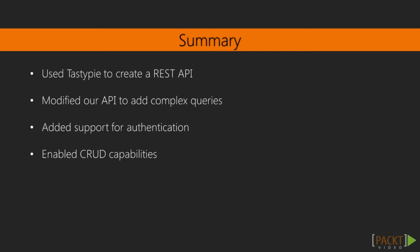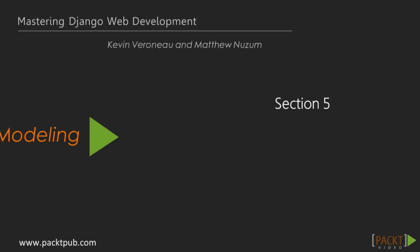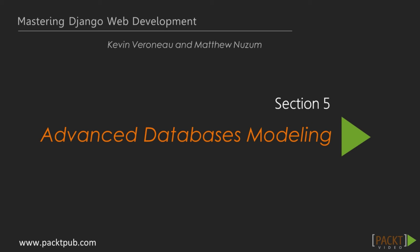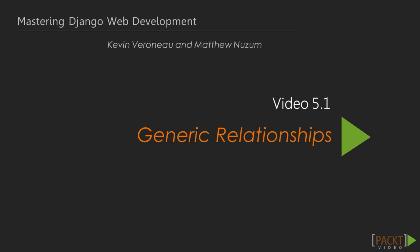To recap what we've covered: we created a new API based on our models, then made it more advanced by adding year as a field and filtering on it, then added authentication support which allows full CRUD support. In the next section, we'll move on to some more advanced database modeling. As you start to build non-trivial apps, you'll occasionally feel constrained by the limits of the database techniques demonstrated in most Django tutorials. The great news is that you have a lot of power available if you just dig a little deeper.